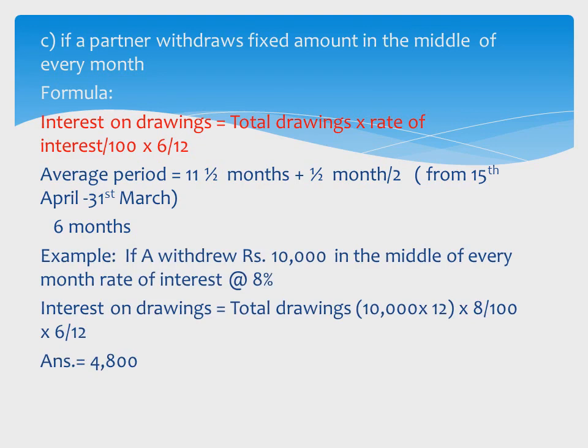Example: If A withdraws ₹10,000 in the middle of every month at 8% interest. Total drawings = 10,000 × 12 = ₹1,20,000. Interest = 1,20,000 × 8/100 × 6/12 = ₹4,800. Hope you understood.